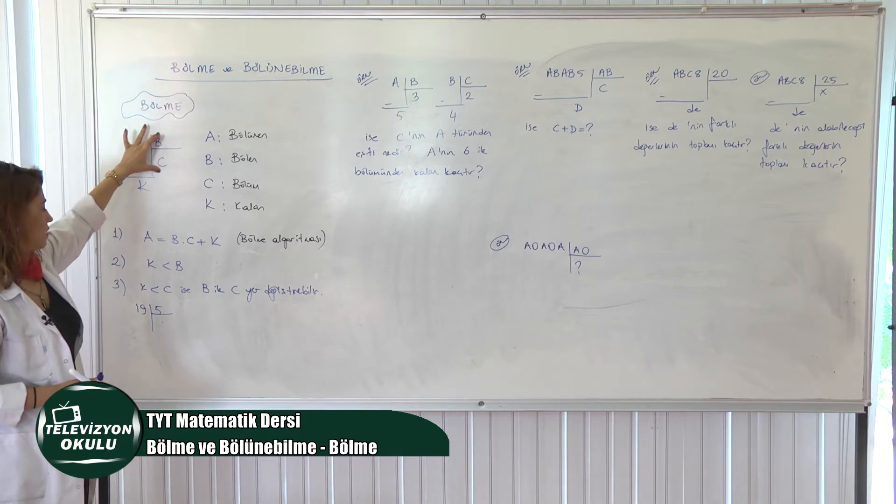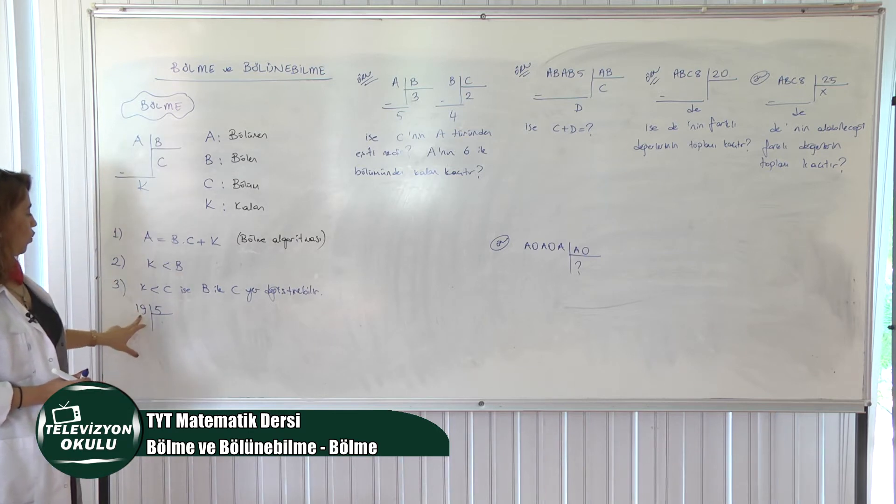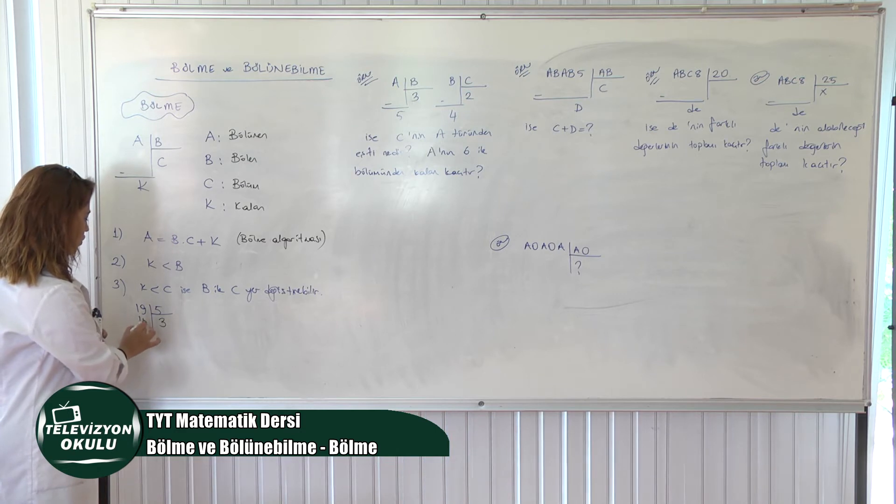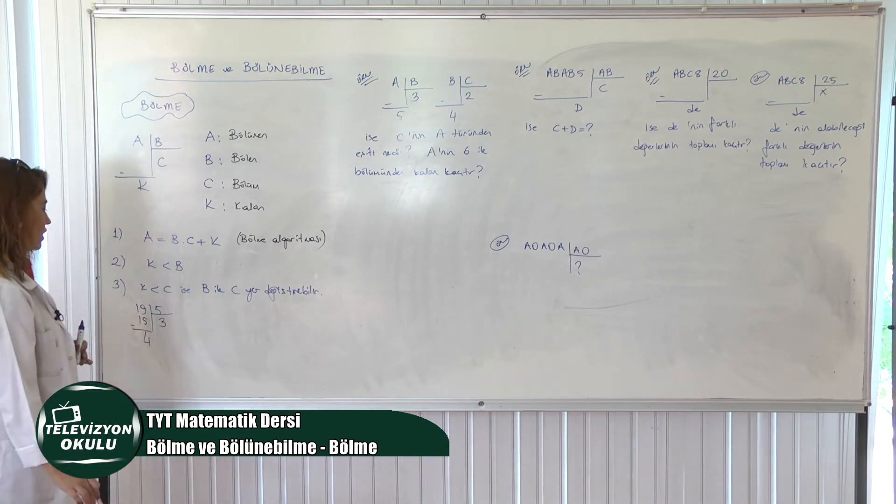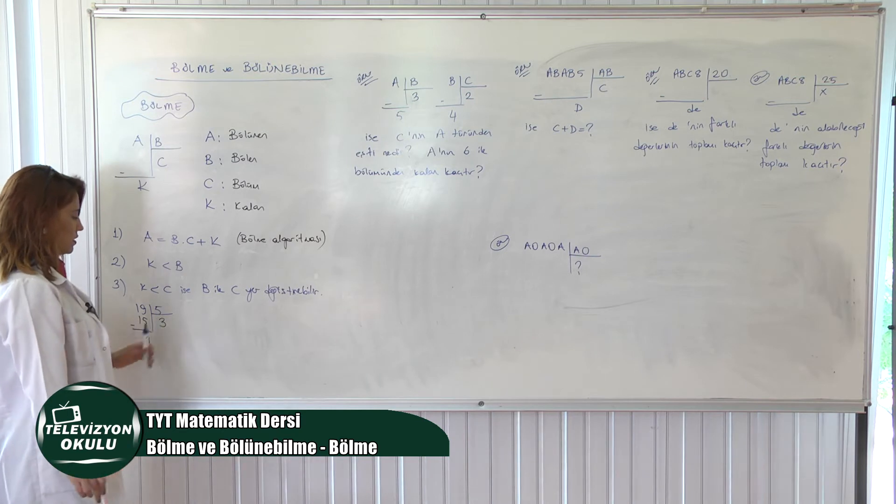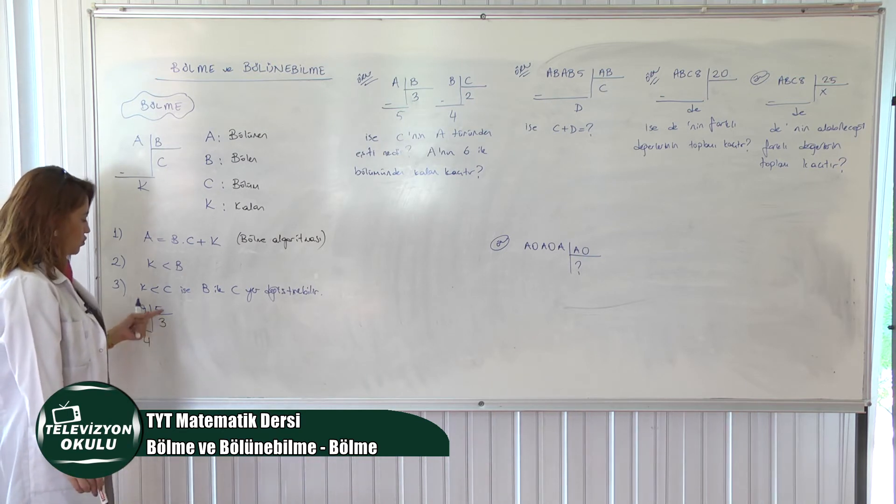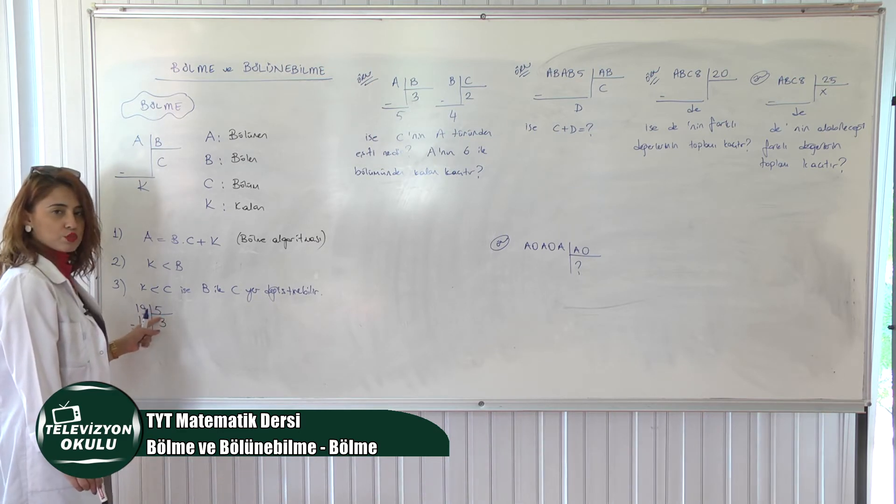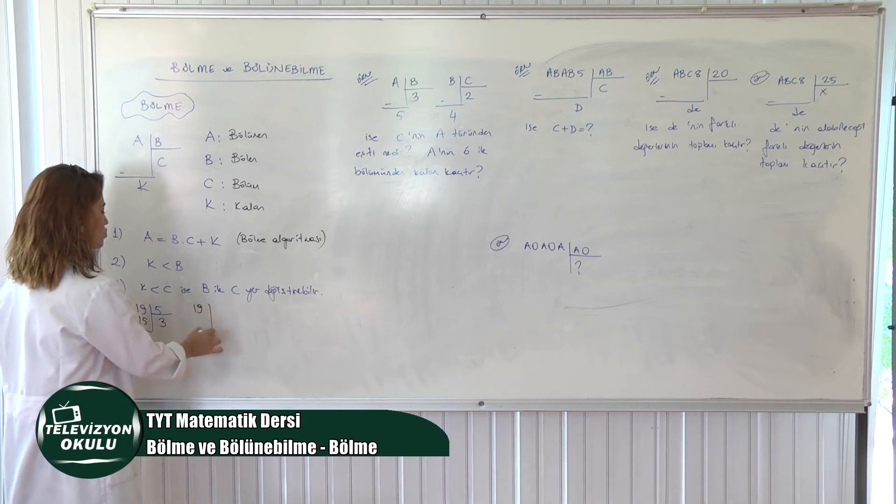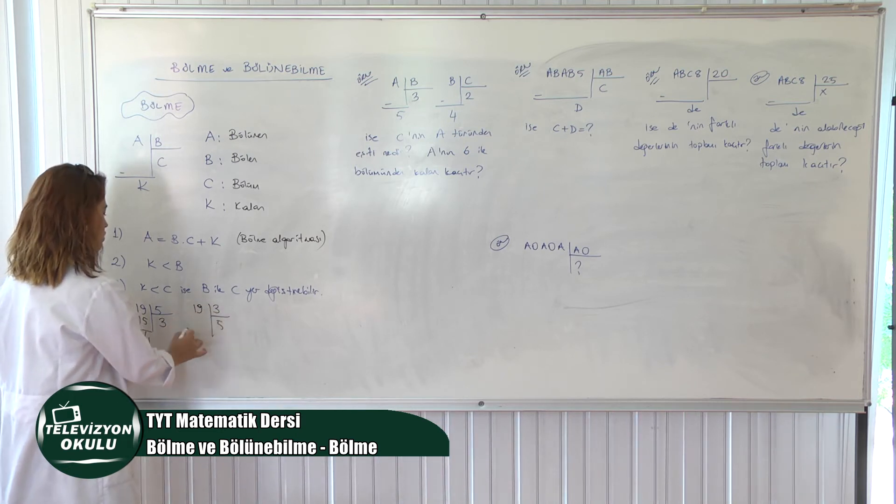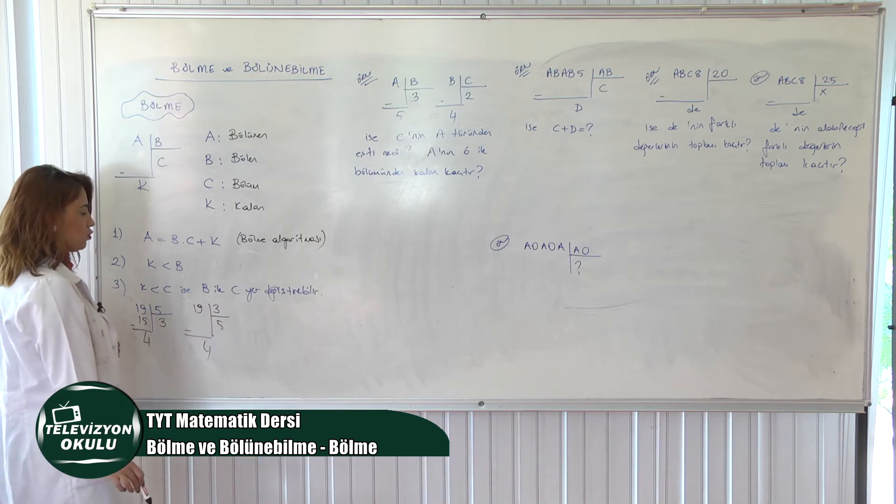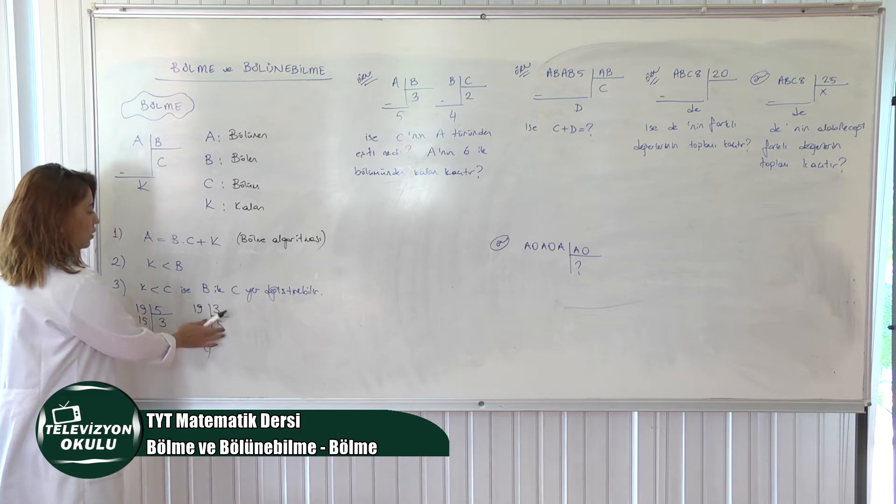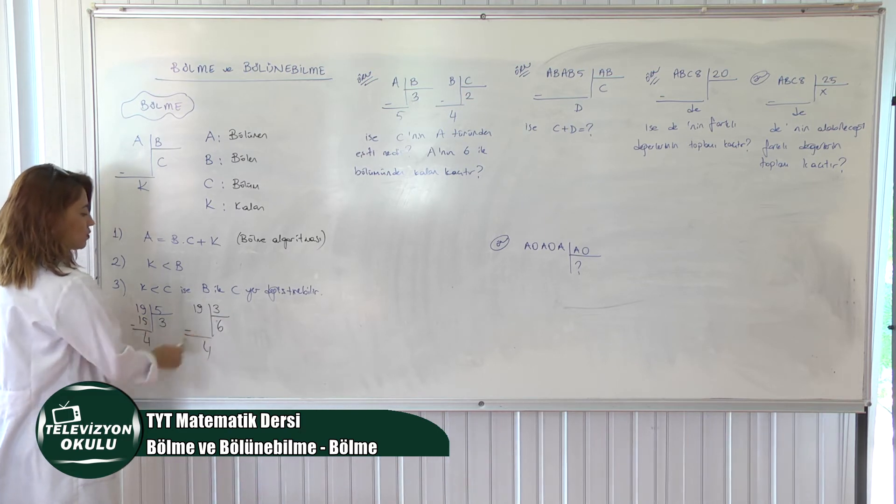Bununla ilgili sorulara yer vereceğim arkadaşlar. Daha iyi anlayacaksınız. Mesela 19'u 5'e böldüğünüzde kaç defa var bakın? 3 defa değil mi? 15 ne kaldı? 4. Şimdi şu anda size desem ki 3 ile 5'in yerini değiştirebilir miyiz? Çünkü sağlama yaptığınızda sonuçta 3 ile 5'i çarpıp 4 ekliyorsunuz. Yer değiştirsem yine 3 ile 5'i çarpmış olurum. Ama şöyle bir durum ortaya çıkar. 19'u 3'e böldüğümde 5 kere mi var ve 4 mi kalıyor? Yani bu durumun aynısı mı oluşuyor? Hayır, 19'u 3'e böldüğümde 5 kere yok ki. Kaç kere var? 6 defa var.